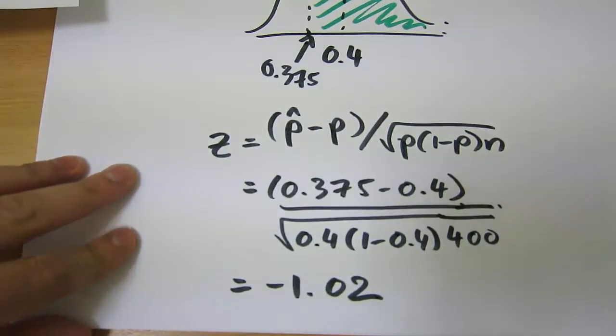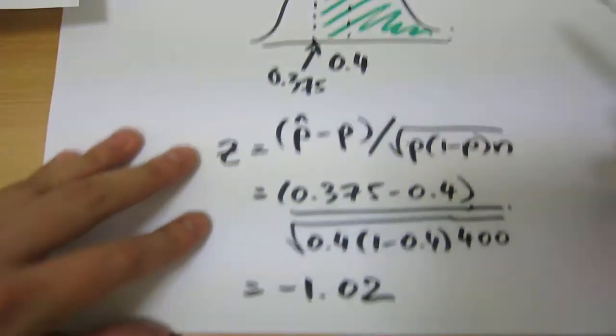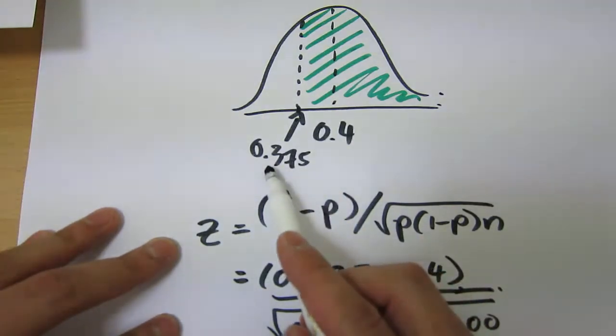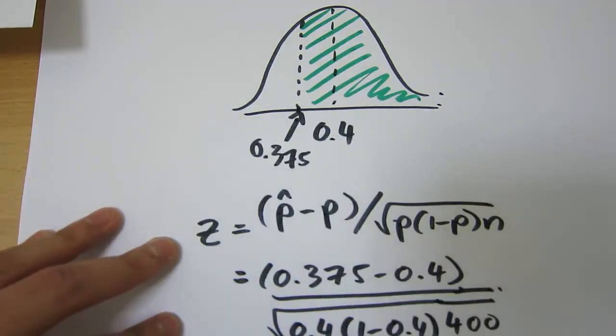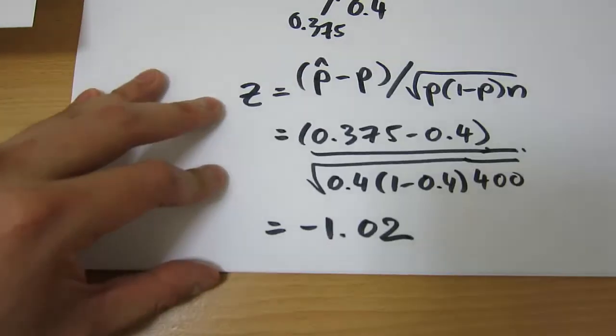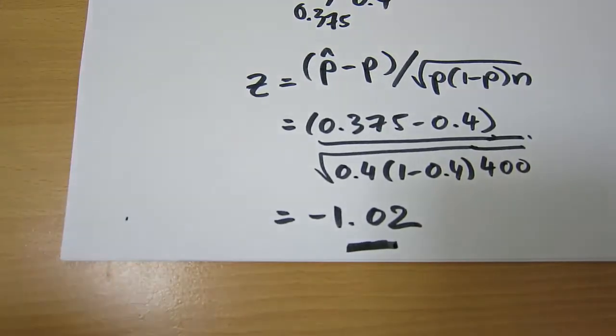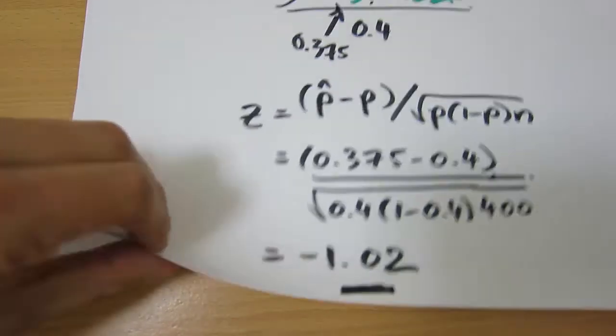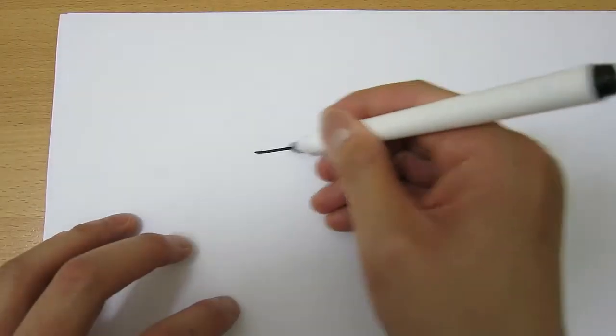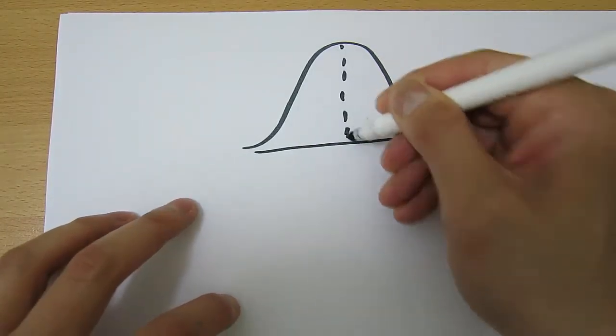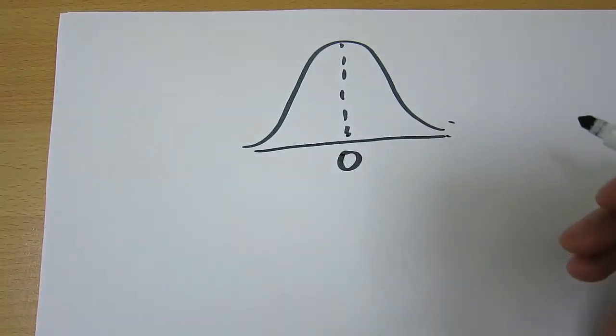So now to calculate this actual probability, we have to use a standard normal distribution table. And the question is, where does 0.375 lie in that standard normal distribution table, or the Z table? Well, we've standardized and we know that it lies at 0 and minus 1.02. This means that our standard normal distribution table looks like this, it's symmetrical around 0.